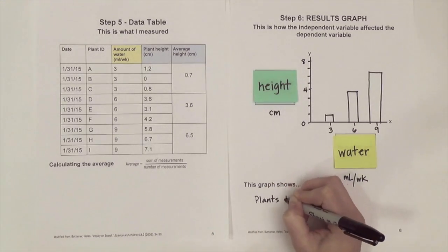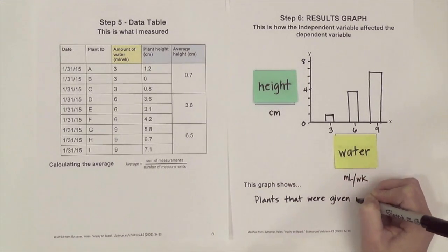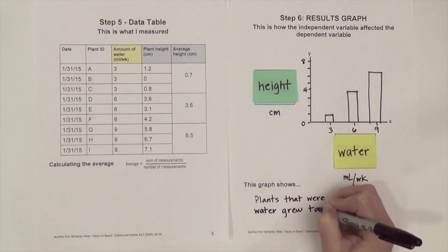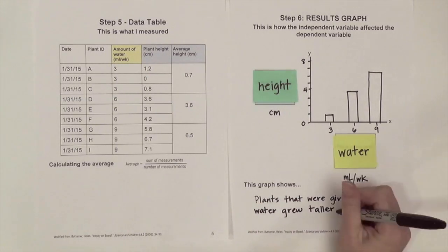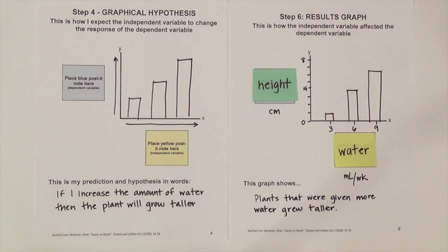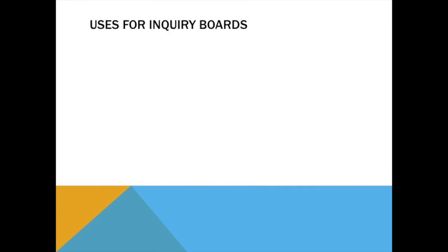In this experiment, we found that plants that were given more water were able to grow taller. As a final step, we can now compare our results to our original hypothesis using the inquiry boards we've created.